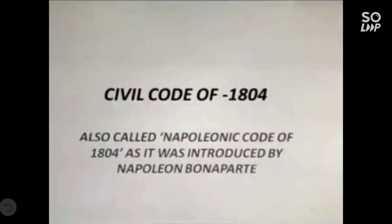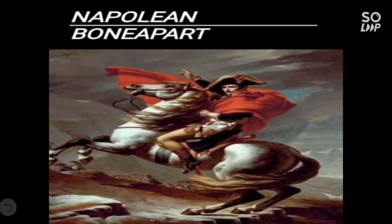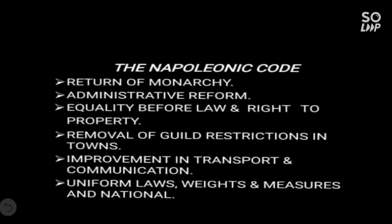Let's move to the next topic. The Civil Code of 1804, also called the Napoleon Code, was introduced by Napoleon Bonaparte. Here is a figure of Napoleon Bonaparte — in 1804 Napoleon Bonaparte crowned himself Emperor of France. The features include: equality before law, right to property, removal of guild restrictions in towns, improvement in transport and communication, uniform law, uniform weight and measurement, and national currency rules.